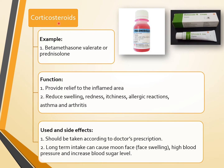The fifth class is corticosteroids — commonly known as steroids. Examples include betamethasone valerate, available in cream or liquid form, and prednisolone in pill form. Function: to provide relief to inflamed areas, reduce swelling, redness, itchiness, allergic reactions, asthma, and arthritis. Side effects: long-term intake can cause moon-face swelling, high blood pressure, and increased blood sugar levels.